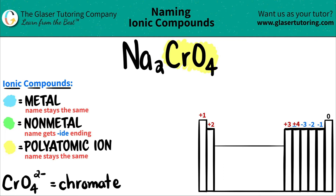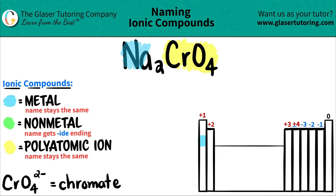The only other element that has to be accounted for is Na, which is sodium. If I look on the periodic table, sodium is right here — it's in group one, and all of group one are metals except for hydrogen. So sodium is a metal.